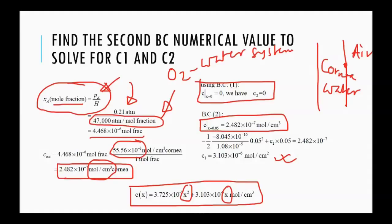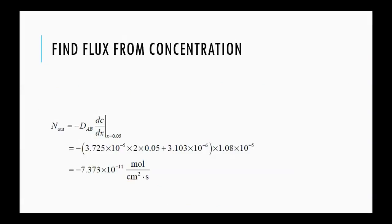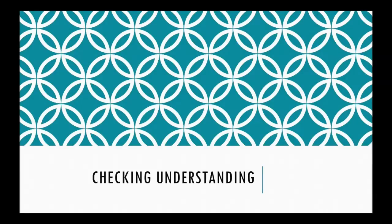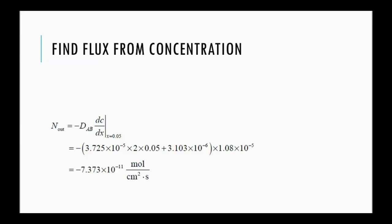So, X squared and X. Now, before we do this flux from concentration, note that the concentration profile we found is parabolic. So, it has a square term. So, it is 0 inside and some value outside.